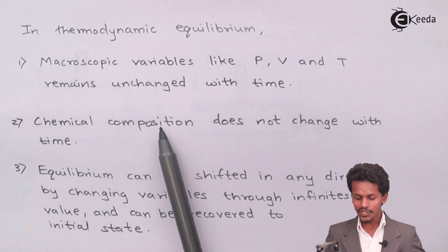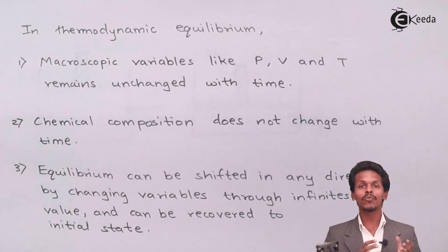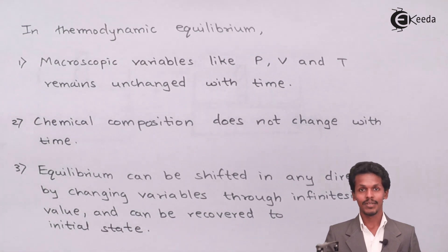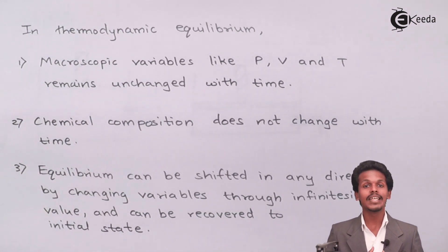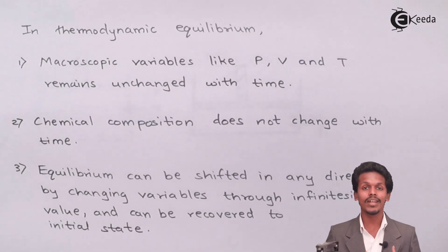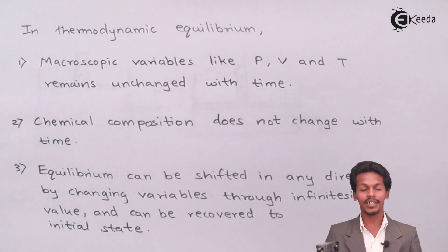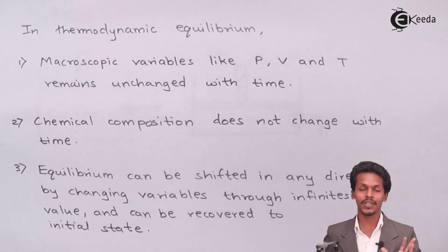The second condition is that the chemical composition does not change with time. Suppose two gases are enclosed in a cylinder. If we keep the pressure as it is, they won't react with each other, so the chemical composition will not be changed. In a system kept in a container under thermodynamic equilibrium, the chemical composition will not change with time.